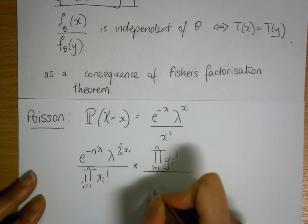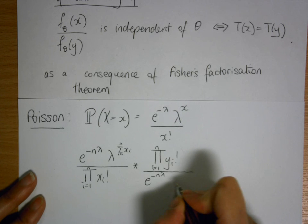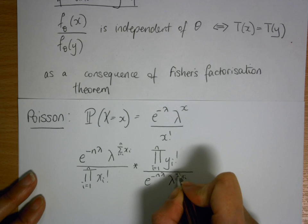And we'll divide that by e to the minus n lambda over lambda to the sum of yi, i equals 1 to n.